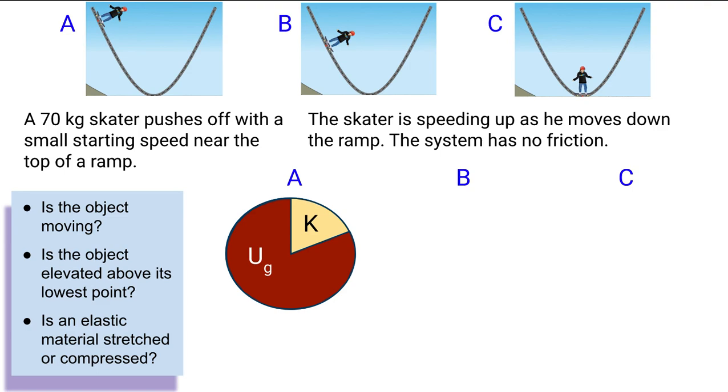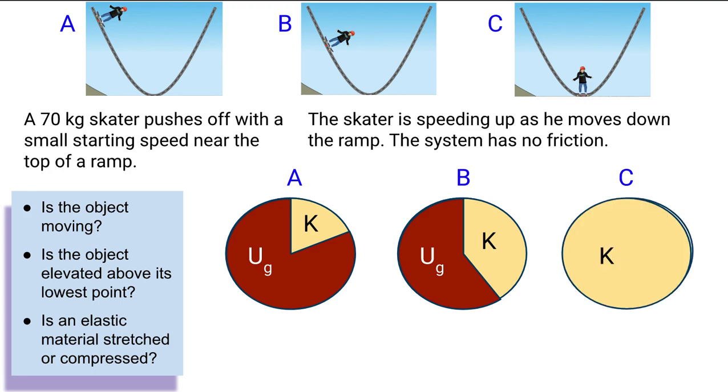As the skater goes down, the potential energy is decreasing because the height above the ground is decreasing. And that means the kinetic must therefore increase. The total pie has to stay the same size, and so the total energy is staying the same amount. That's what we mean by energy being conserved. And then when we get to the last point, the skater is at the very lowest point. So he's no longer elevated above the lowest point. There would be zero gravitational potential energy. All of the energy would now be in the form of kinetic. These are some visuals to help us understand the law of conservation of energy. And then in the next video, we'll talk more about calculations and using these ideas to predict what happens for a certain object's motion.